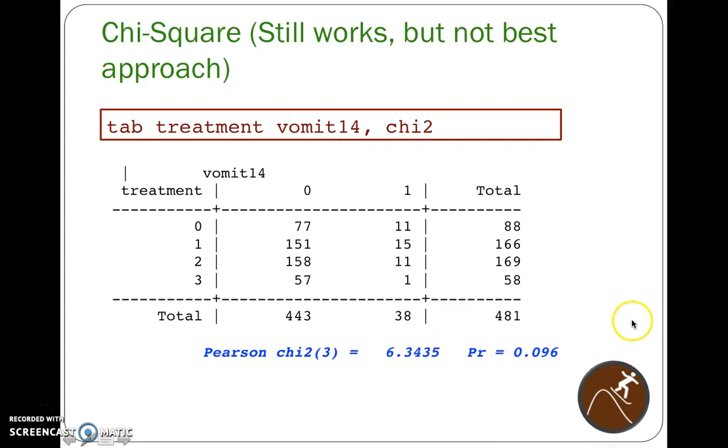We could also do the chi-square test, but it's not the best approach, and it gives us a p-value of 0.096, which also would be not significant. But I wouldn't recommend doing this because this has a value of 1.